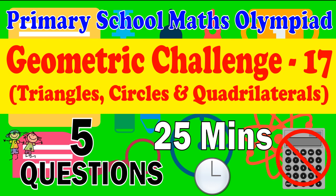Primary School Math Olympiad Geometric Challenge 17. Triangles, Circles and Quadrilaterals. This is a challenge for Primary School Math Olympiad for questions related to geometry with mixtures of triangles, circles and quadrilaterals. There are five questions. The challenge is to complete them within 25 minutes.